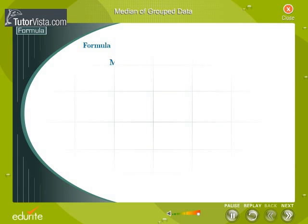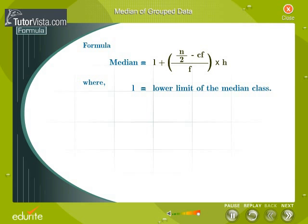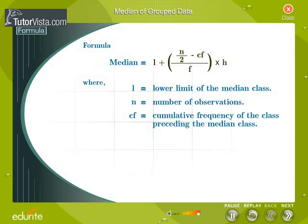The formula to find the median of grouped data is as follows. L is the lower limit of the median class. N is the number of observations. CF is the cumulative frequency of the class preceding the median class. F is the frequency of the median class. H is the class size.